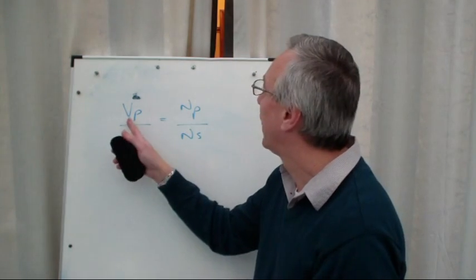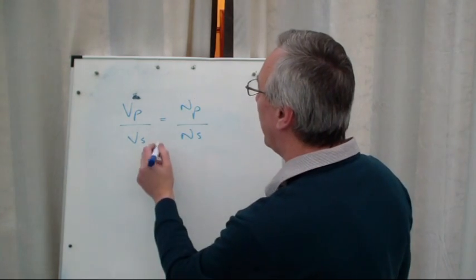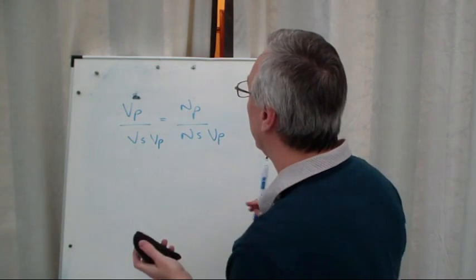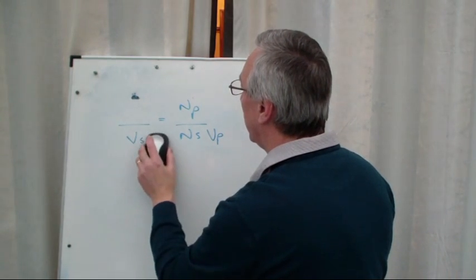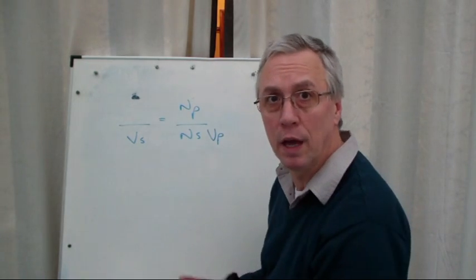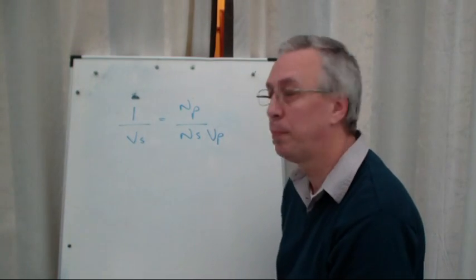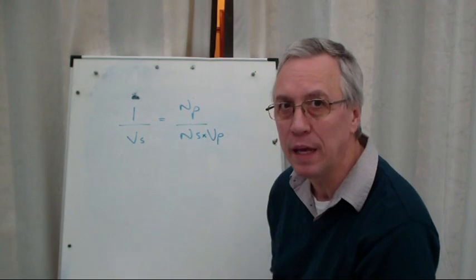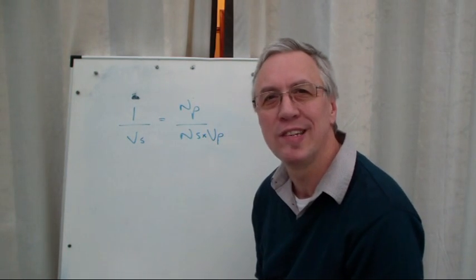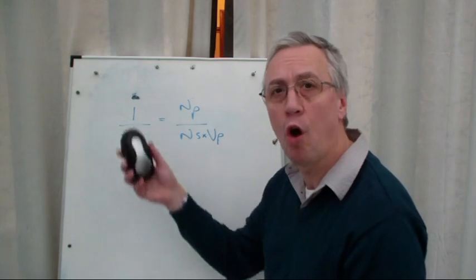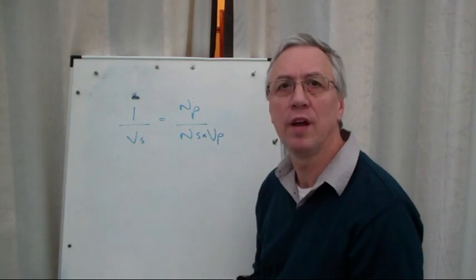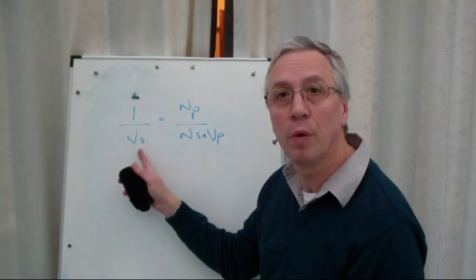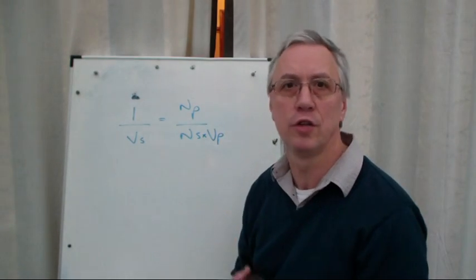So let's start by getting rid of the VP. So if we divide this side by VP and this side by VP, then they'll cancel out. VP divided by VP is just 1. So we end up with 1 over VS equals NP divided by NS times VP. It's looking quite complicated. VS that we're trying to find is still on the bottom of the formula. We want it on the top. At this stage, I think it's better to take the rule that whatever you do to one side, you do to the other. So the easiest way to get that to the top is just to invert it, to turn it upside down.